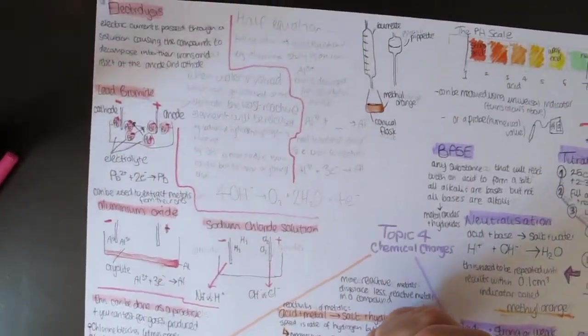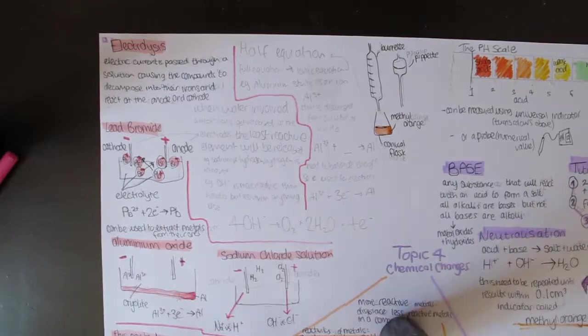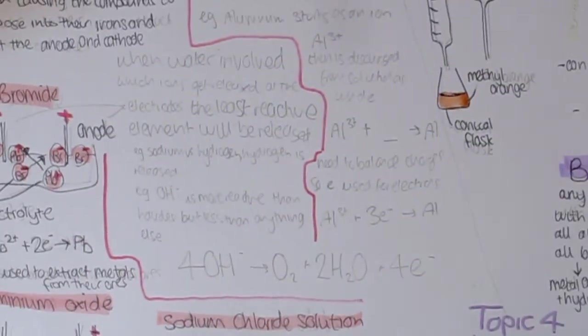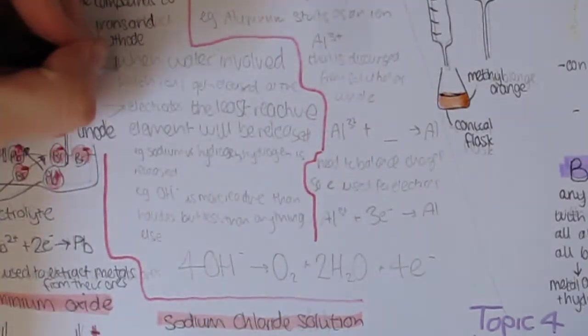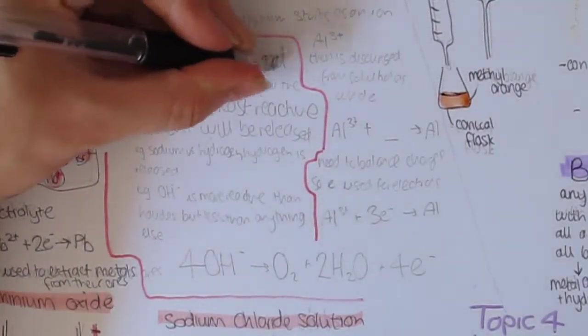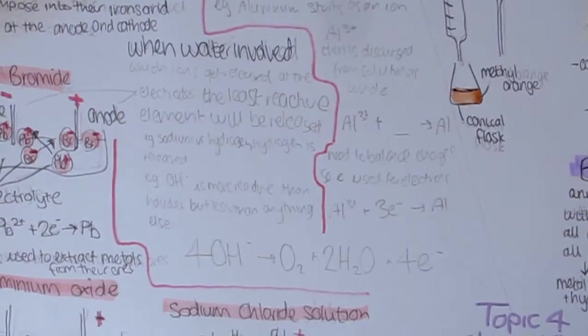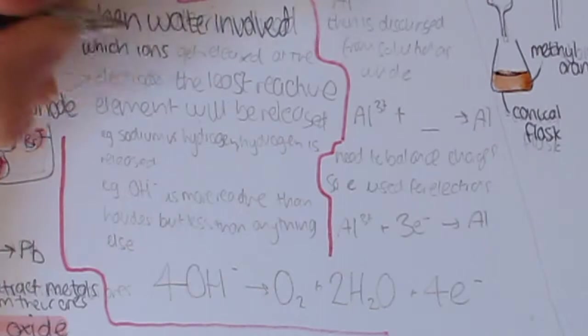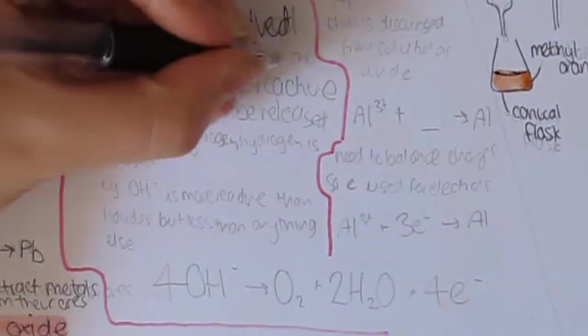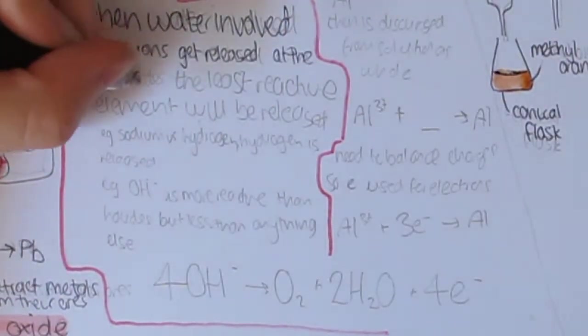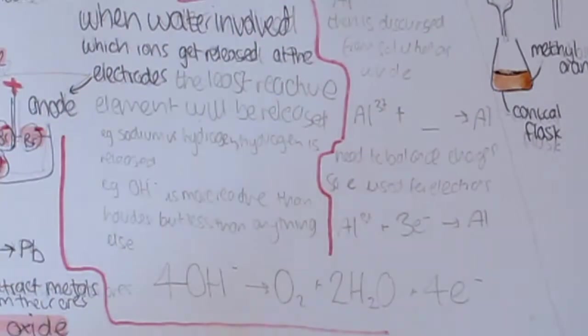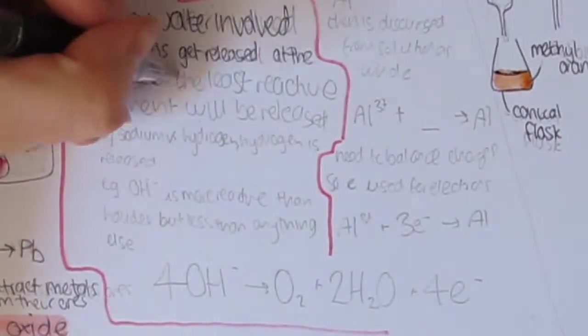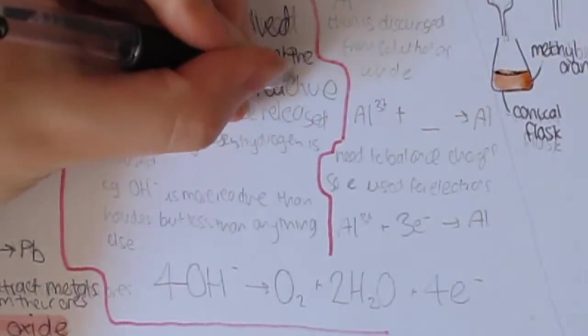When electrolysis takes place on an aqueous solution, the hydrogen and hydroxide ions from the water will also try to be discharged from the solution, so they must be considered. Which ions get discharged depends on their relative reactivity. At the cathode, the less reactive element will get discharged from their electrolyte. For example, sodium versus hydrogen: hydrogen will be released. But copper versus hydrogen: copper will be released.